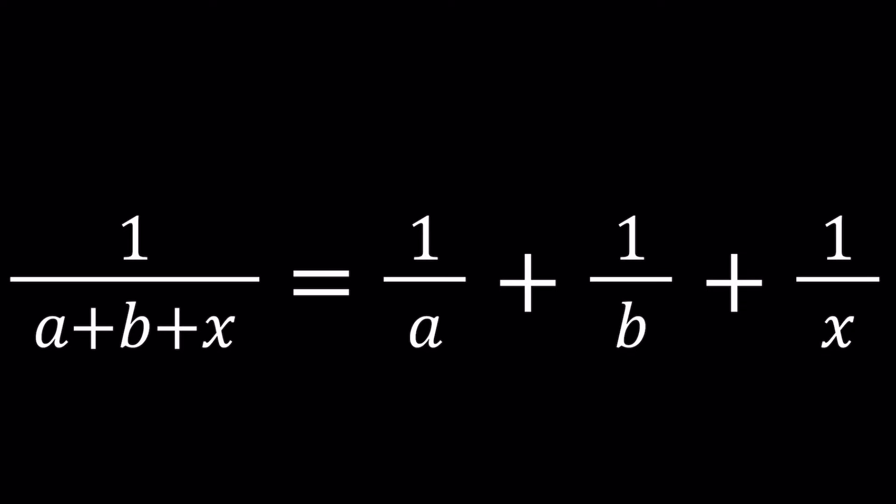Hello everyone. In this video we're going to be solving a nice rational equation. I think this problem appeared in a couple different math competitions as well as a math journal called Parabola, but I'm not exactly sure which competition. Anyway, we have 1 over a plus b plus x equals 1 over a plus 1 over b plus 1 over x. Obviously this is not always true, so it's not an identity, but it's only true for certain values of x. So we're going to be solving for x in terms of a and b.